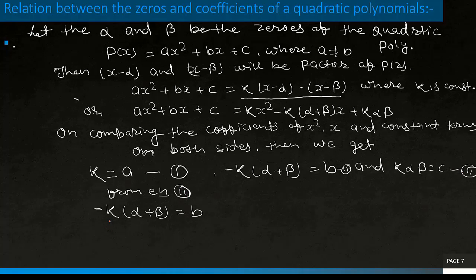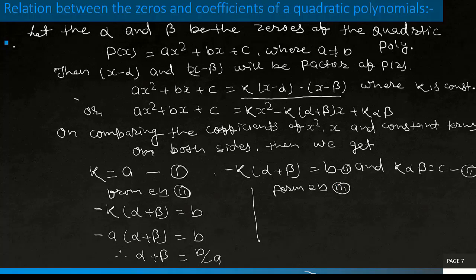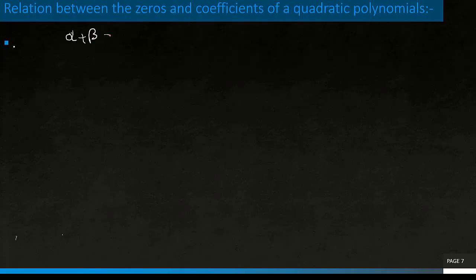When we put the value of k into equation 2, we get minus a(alpha plus beta) equals b. Hence, alpha plus beta equals minus b by a. And when we put the value of k into equation 3, we get a·alpha·beta equals c. Hence, alpha·beta equals c by a.